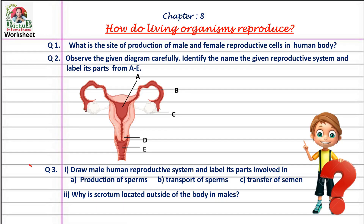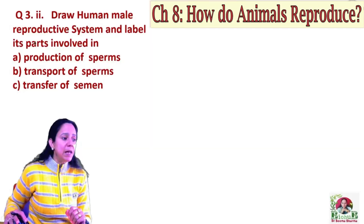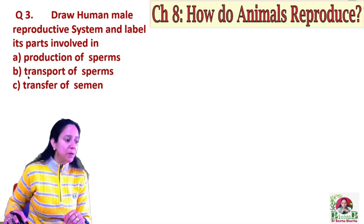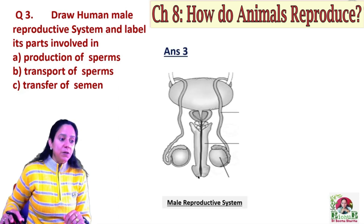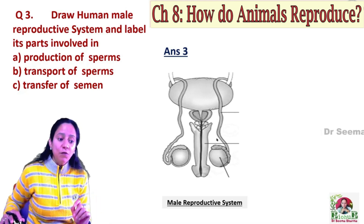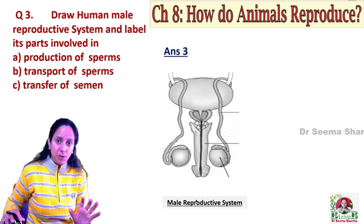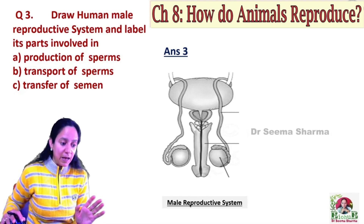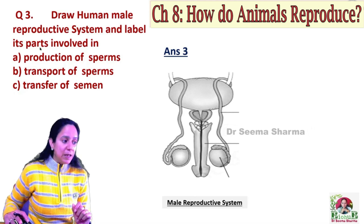Now I am taking another question from the same worksheet — this is question number three. Draw the human male reproductive system and label its parts involved in: A) production of sperms, B) transport of sperm, and C) transfer of semen. In your answer you have to first draw the diagram of the male reproductive system, and at the bottom of the diagram write 'male reproductive system'.